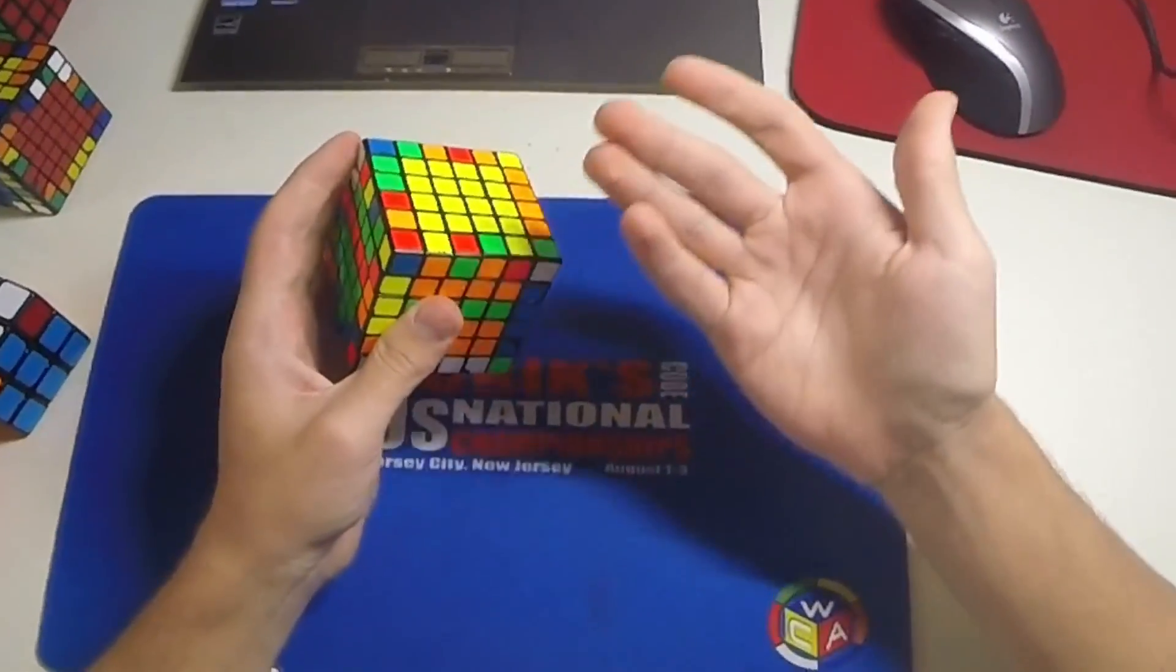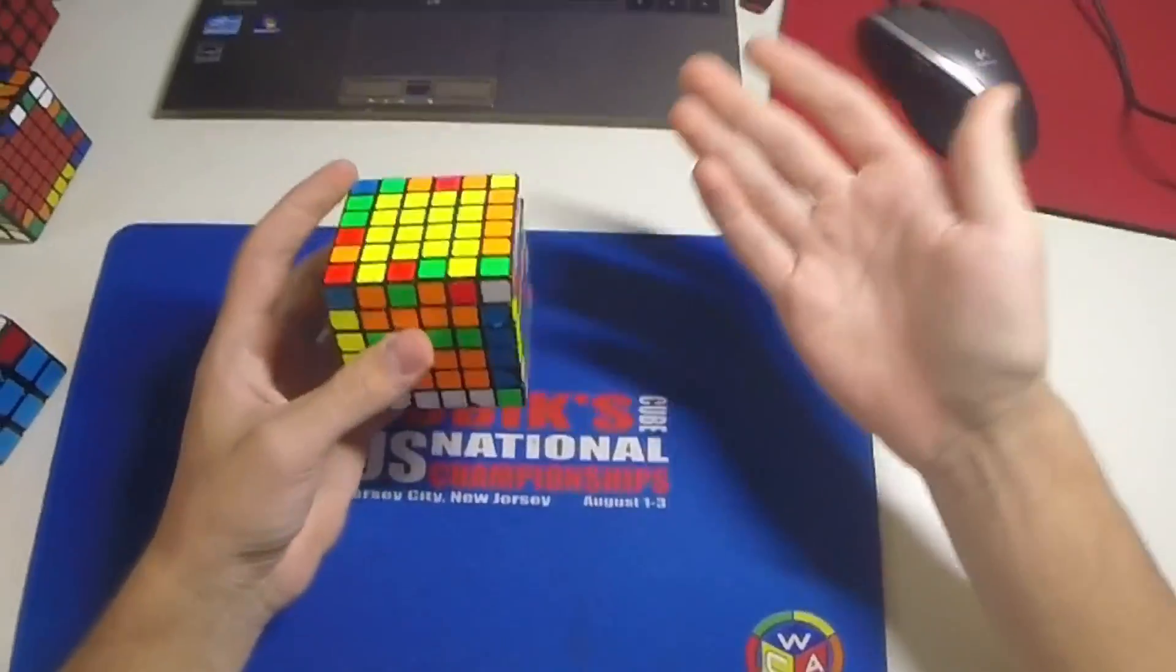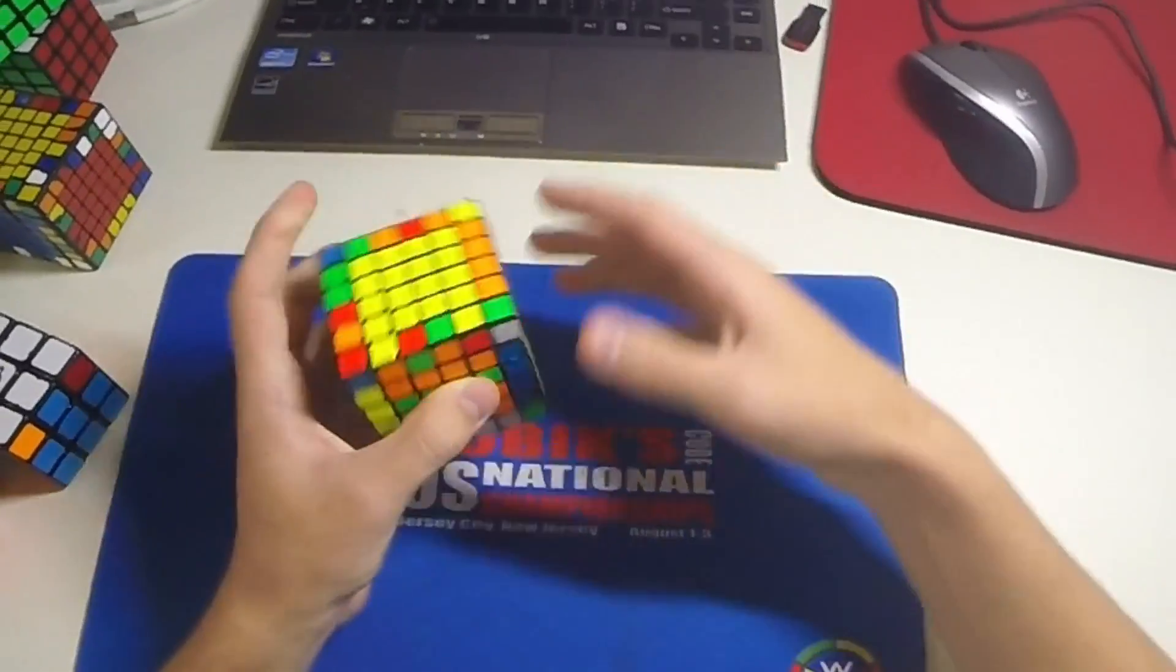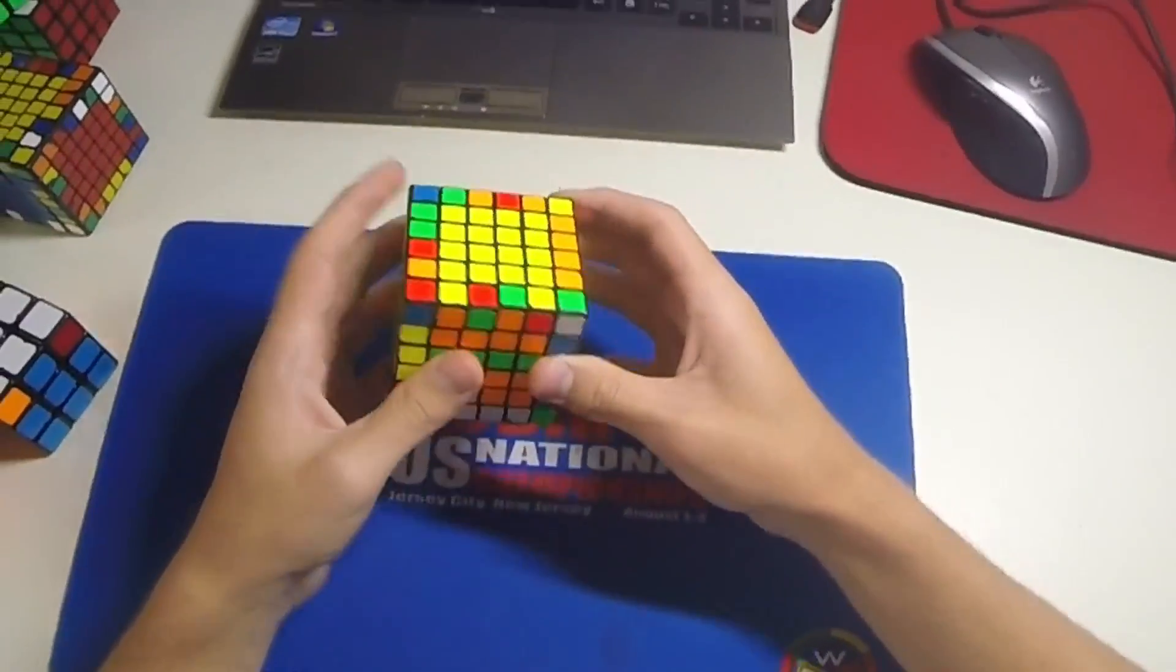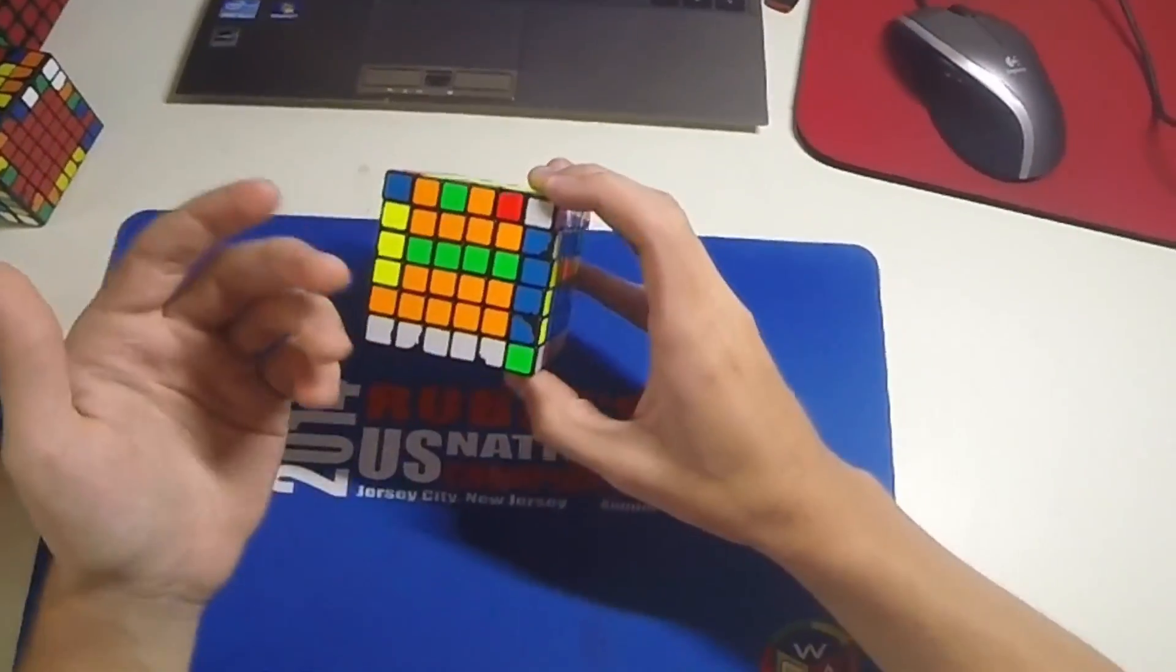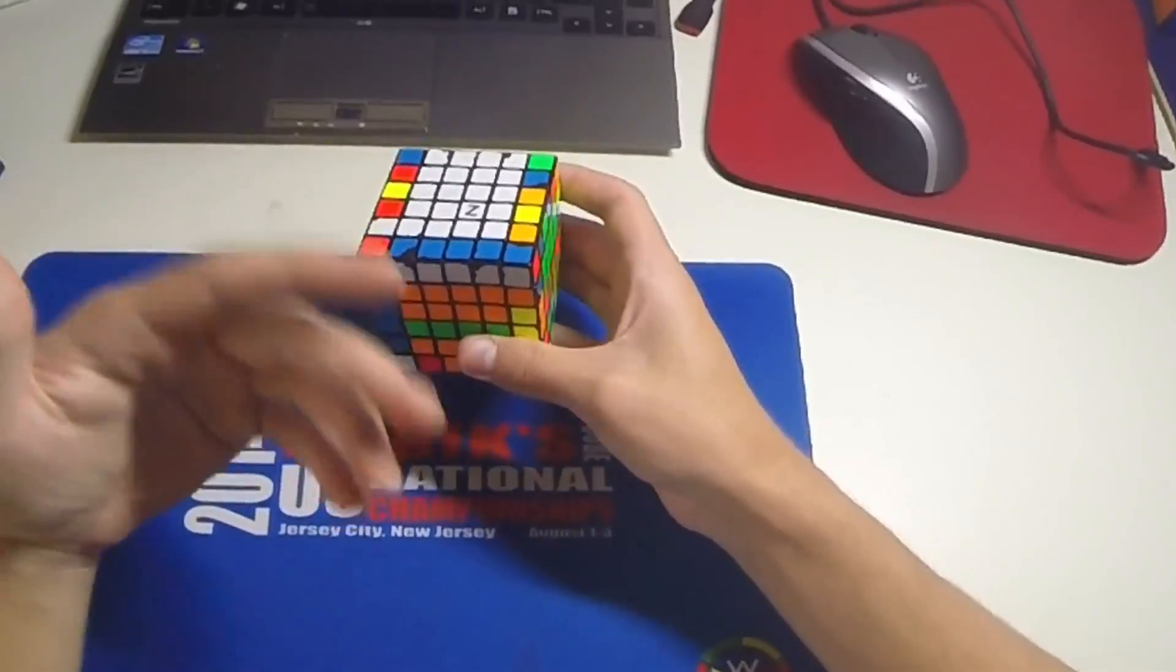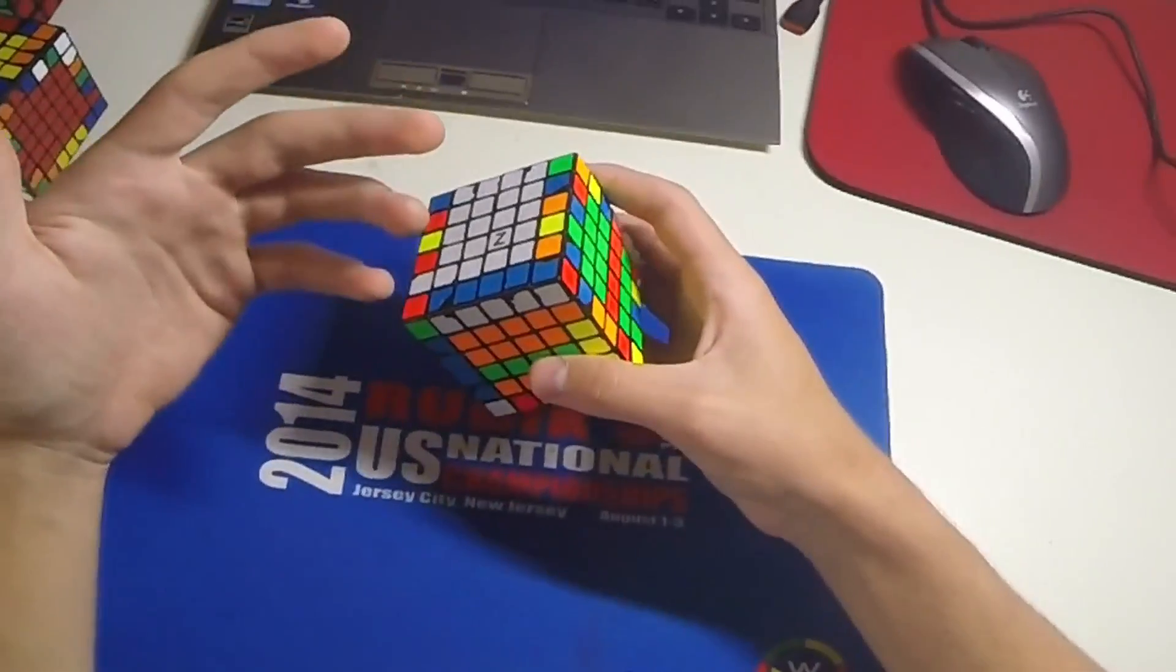This gets to a point where a lot of people try to store four edges in the top layer. That can be good because it helps look-ahead quite a bit, especially if you do four in one layer first and then flip it over. Then most of your last four edges are going to be two-gen and you're not going to have to flip it at all.